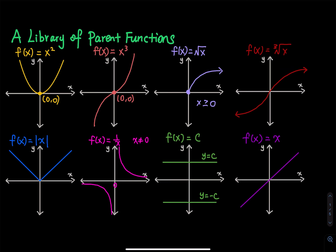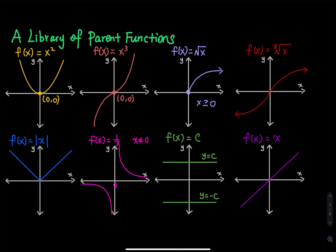Next is the absolute value function: the absolute value of x. It has a V-shape. When x equals positive two, y equals positive two; when x equals negative two, y still equals two. Absolute value keeps everything positive or zero, so you have a vertex at zero comma zero.